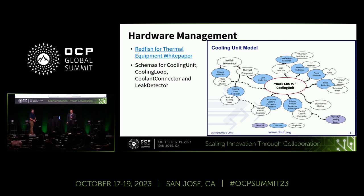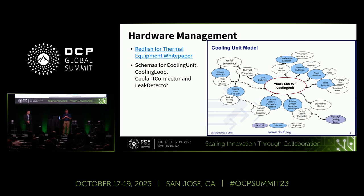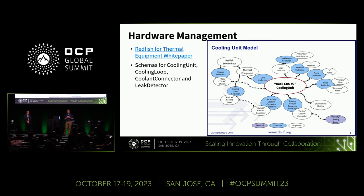Next we'll talk about hardware management. There's been a lot of work done within OCP developing the Redfish schemas. Mick Jones, who's the lead of that group, has contributed to this document as well. It discusses the overall schemas you would need for a cooling unit or a CDU, the cooling loop, leak detectors, and a whole bunch of other information that needs to be reported depending on the level of redundancy you want in your system. One thing to note: the OCP schema for Redfish is the schema for Redfish — they're one in the same, so this is pretty much an industry standard now.